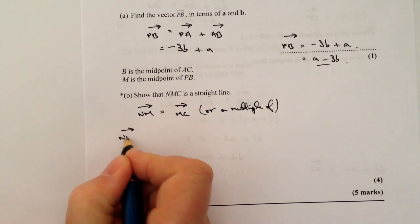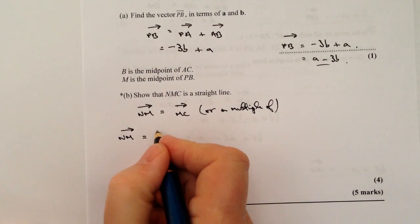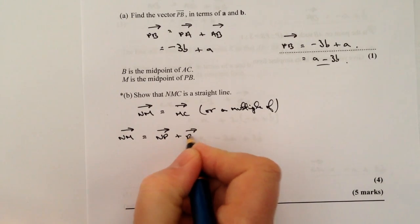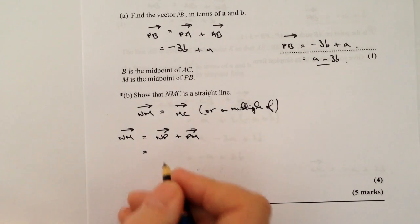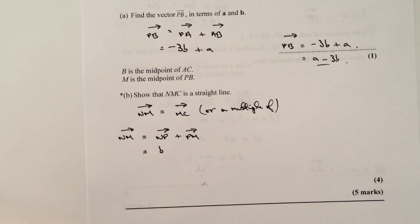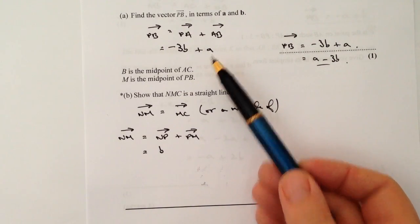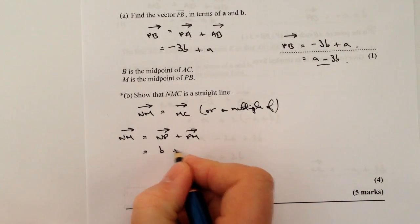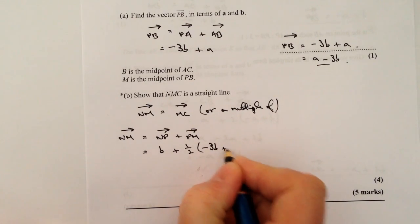So let's have a look at that. The first thing is I'm going to look at vector NM. Well, if you refer back to the diagram, what you'll find is that vector NM is equal to vector NP plus vector PM. So NP is fairly straightforward. We've got vector B, which we can see from the diagram. And then the other part of it is PM. Well, we know that vector PB, because we worked that out in the previous questions. And we're also told that M is the midpoint. And because it's the midpoint, it basically means that vector PM must be equal to a half of vector PB, which is minus 3B plus A.